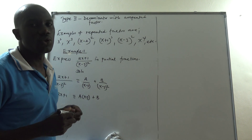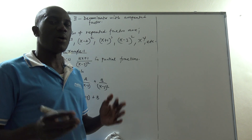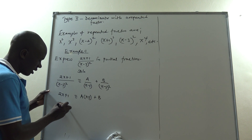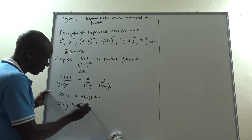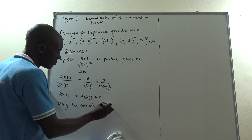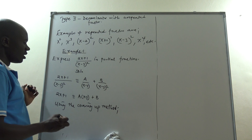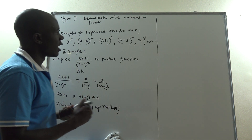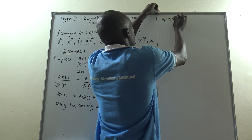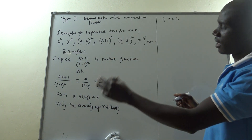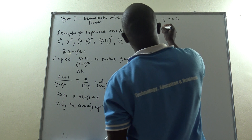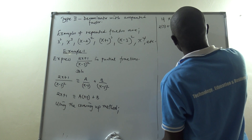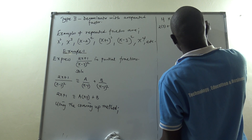We are going to use the covering up method — that is, the elimination method. If x equals 3, we substitute into both the left hand side and the right hand side. We get 2 times 3 plus 1 equals A times (3 minus 3) plus B. Since 3 minus 3 gives 0, this simplifies.